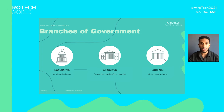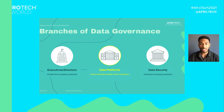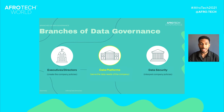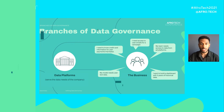Here in the United States, our democracy has three branches of government. The legislative branch makes the laws, the judicial branch interprets the laws, and the executive branch serves the needs of the people by carrying out those laws. The branches of data governance are very similar. Executives and directors create company policy. Data security interprets those policies, and in collaboration with those branches, data platforms serves the data needs of the company. This is a very important separation of power when striving to achieve data democracy.